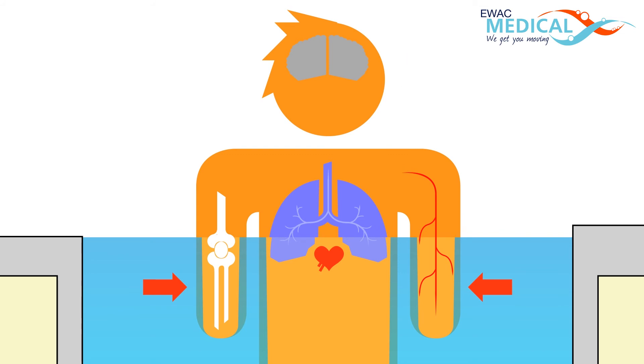When submerged in water, proprioception is also reduced. This means that it is more difficult for the brain to determine the position of arms and legs relative to the body. Most likely this occurs because humans spend most of their time on dry land.